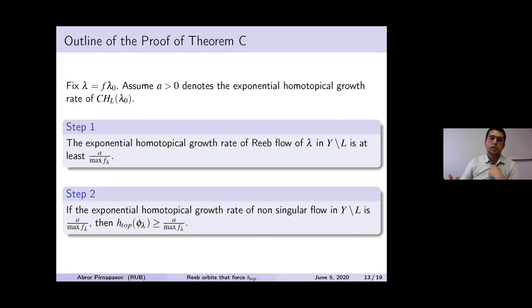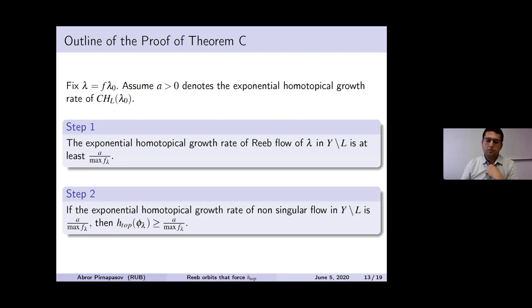The second step shows that for any non-singular flow on a compact manifold complement of L, if it has exponential homotopical growth, then the topological entropy is bounded below by this exponential growth rate. This theorem only requires C^2 regularity from the contact form or C^1 regularity from the Reeb flow.